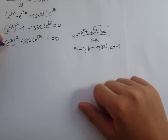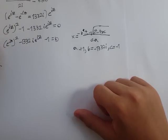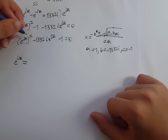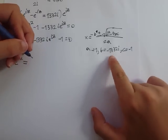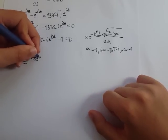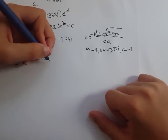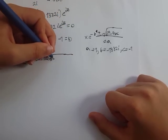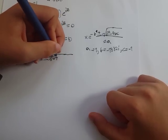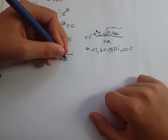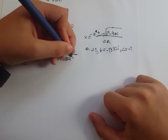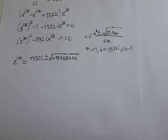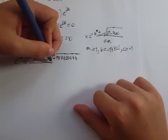The unknown x is e to the iz. So e to the iz equals negative b, which is 1332i, plus or minus square root of b squared. i times i is negative 1, so it's negative 1332 squared plus 4, and all of this is over 2a. a equals 1, so all of this is over 2.